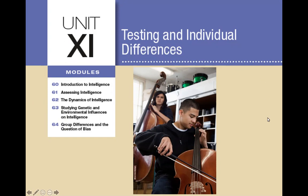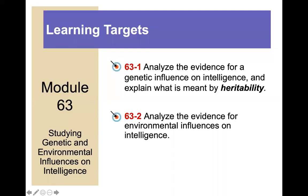Welcome to Unit 11, Testing and Individual Differences. We are going to be going over Module 63, Studying Genetic and Environmental Influences on Intelligence. These slides align with Myers Psychology for the AP course, third edition. This is a rather short module with only two learning targets: first, to analyze the evidence for genetic influence on intelligence and explain what is meant by heritability; second, to analyze the evidence for environmental influences on intelligence.